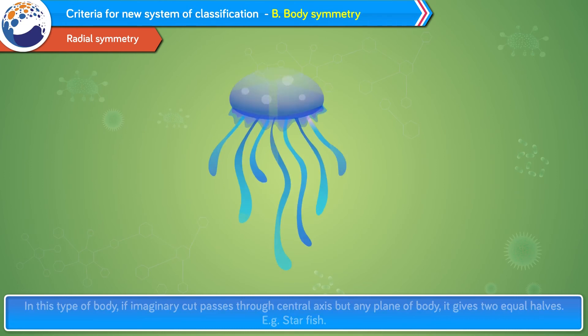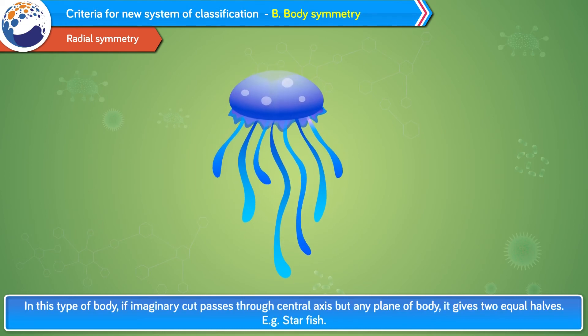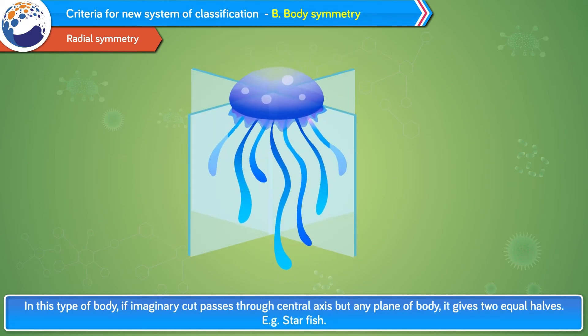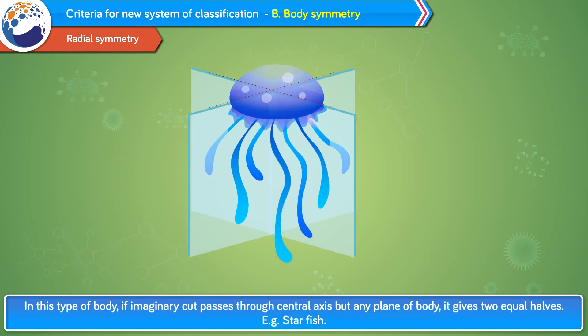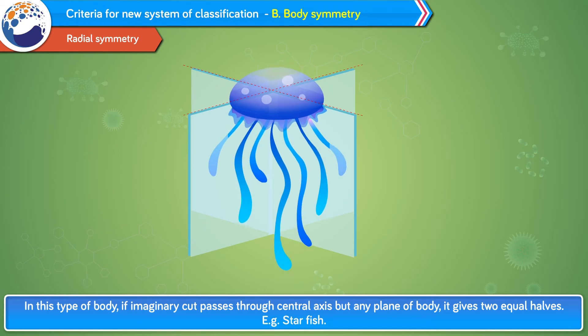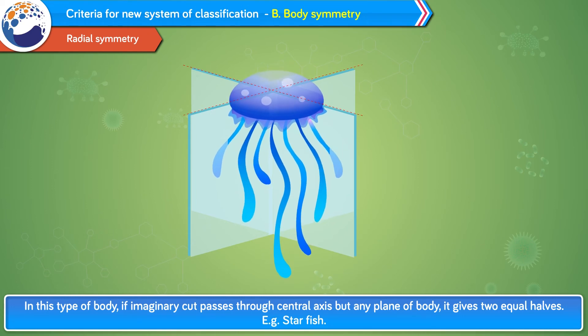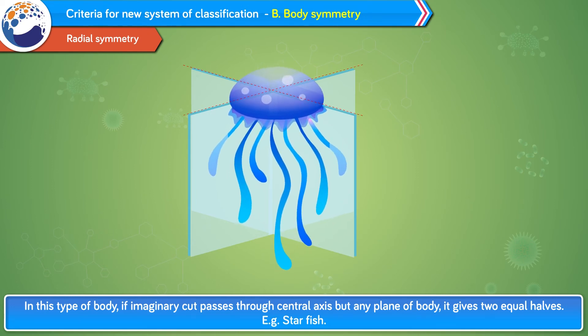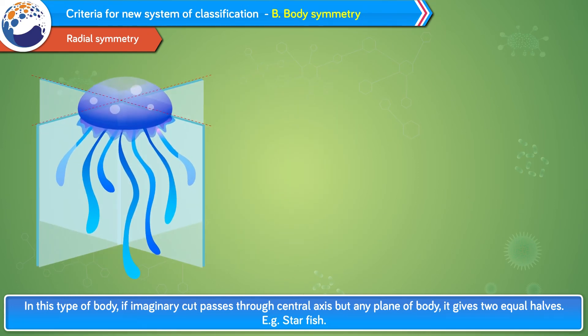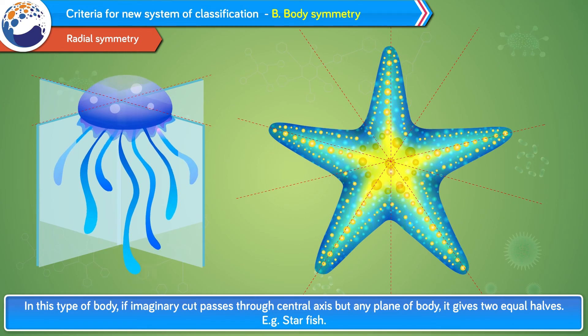Radial symmetry: in this type of body, if an imaginary cut passes through the central axis in any plane of the body, it gives two equal halves. Example: starfish.